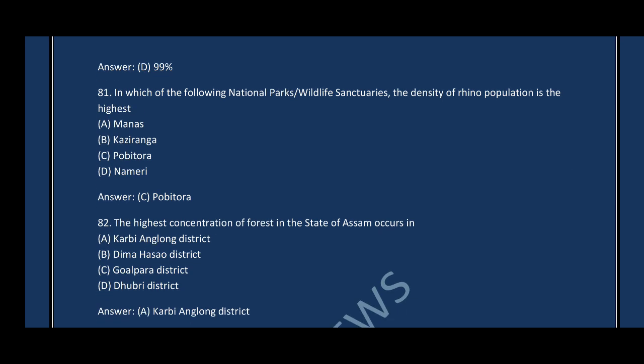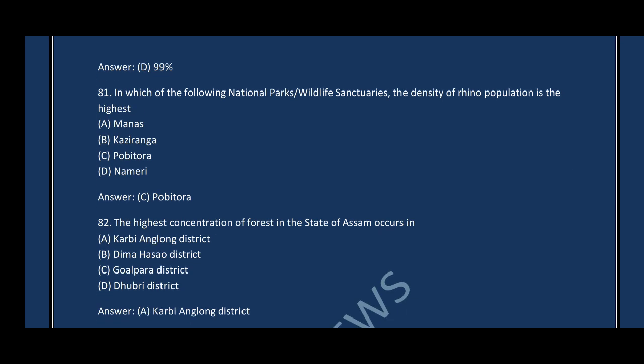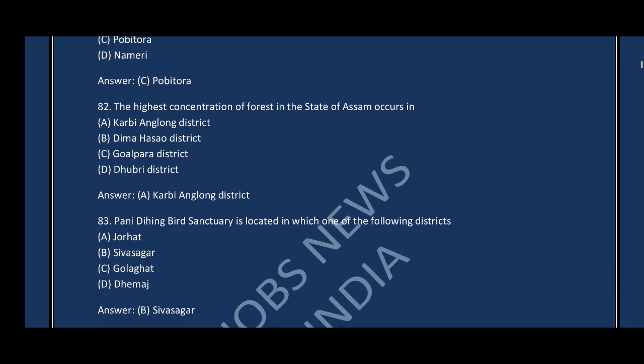Question number eighty-one: In which National Park is the density of rhino population the highest? The correct answer is option C — Pobitora. Question number eighty-two: The highest concentration of forest in the state of Assam occurs in — the correct answer is option D, Karbi Anglong district.